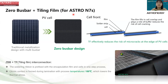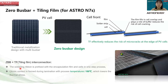Our N7S product for residential application adopts zero busbar and tiling film design. The zero busbar and tiling film interconnection is achieved by prefixing the solder ribbon with encapsulation film and a cell in a one-step process. Ohmic contact is formed during lamination, and the whole process temperature is below 150°C. Due to the absence of high-temperature soldering, we lower the thermal stress. The tiling film allows negative cell gap and fills the cell overlap as a buffer, effectively reducing the risk of macro cracks at the edge of PV cells.